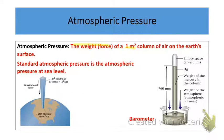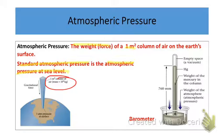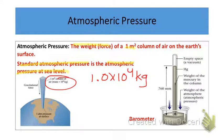The standard atmospheric pressure is the atmospheric pressure at sea level. To know how much pressure there is at sea level, we need to know the mass of the column of air in one square meter. It turns out that column of air has a mass of 1.0 × 10⁴ kilograms. The weight of that column of air in one square meter equals the atmospheric pressure at sea level.